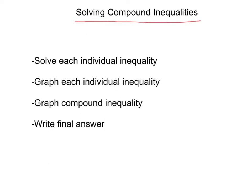Compound inequalities are inequalities that involve the and, ors, and the in-between. Whenever you want to solve a compound inequality, here are your basic steps: first, solve each individual inequality; second, graph each individual inequality; third, graph your compound inequality; then write your final answer. It may seem a little confusing, but it's very systematic. Let's do some examples.